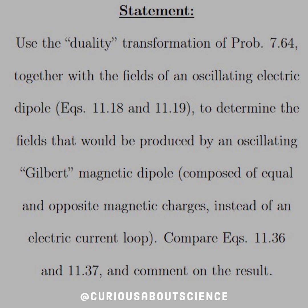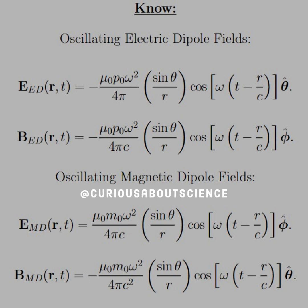Remember the Gilbert model had two magnetic charges instead of having a current, and we'll go ahead and see what's going on. What we need to know is that the oscillating electric dipole fields — which I have as ED for electric dipole and MD for magnetic dipole — have some symmetries. Constants change a little bit; that 1-over-C factor is there. P goes to M, and we see some sign changes. The cross products point in kind of different directions, so be aware.